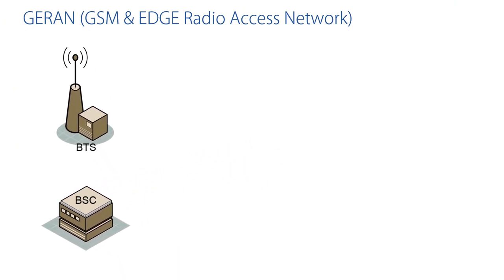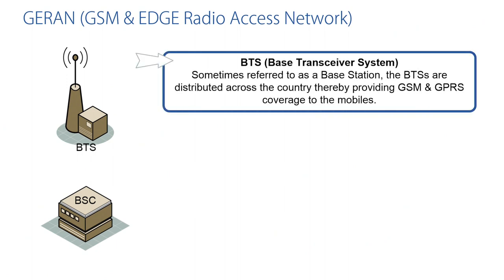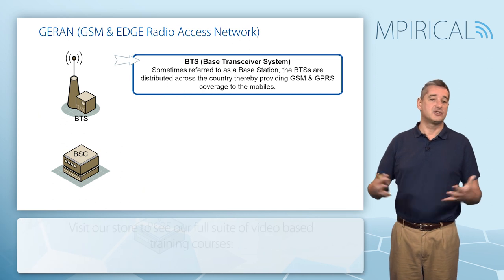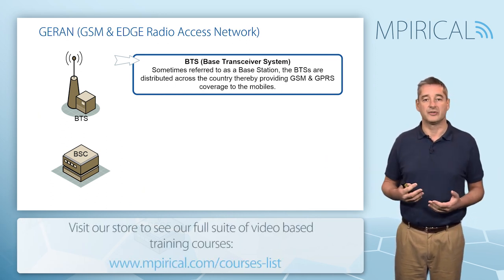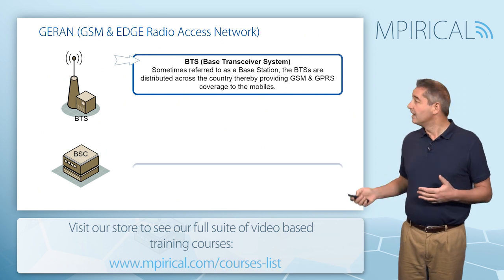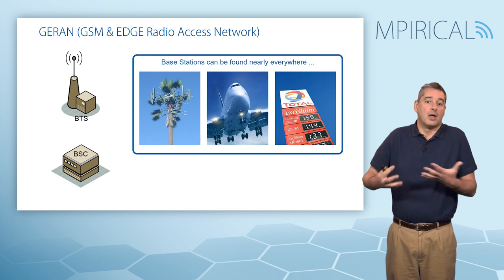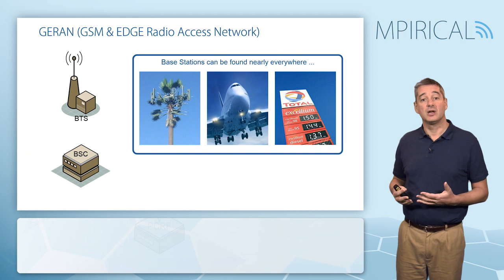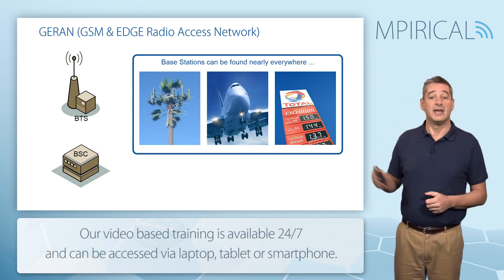The BTS, or Base Transceiver Station, provides us with our coverage across the network. We see these distributed around the countryside, by the sides of roads and on tops of buildings. It's not uncommon now to find base stations hidden in other pieces of architecture — possibly disguised as trees or hidden in street furniture.